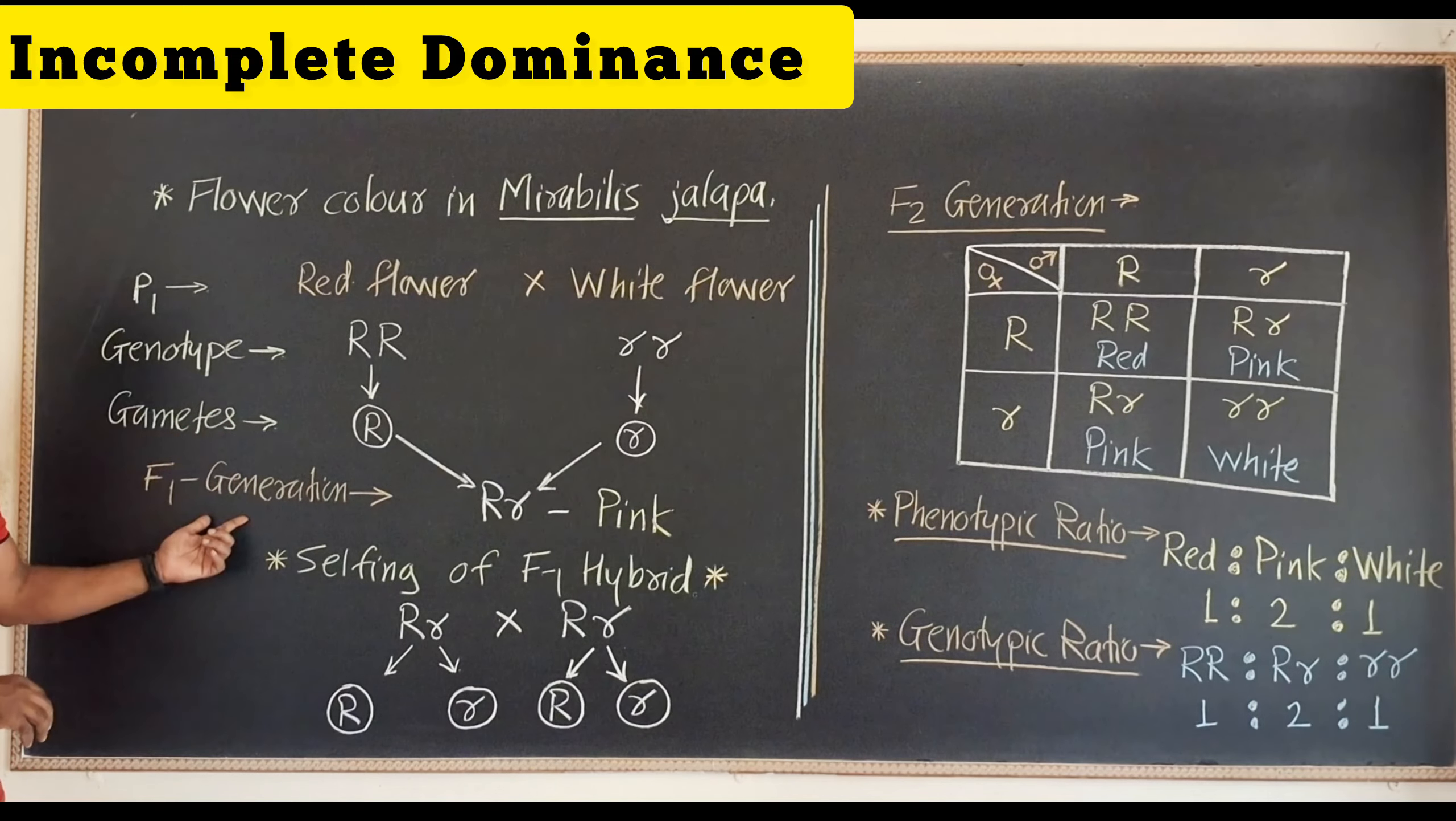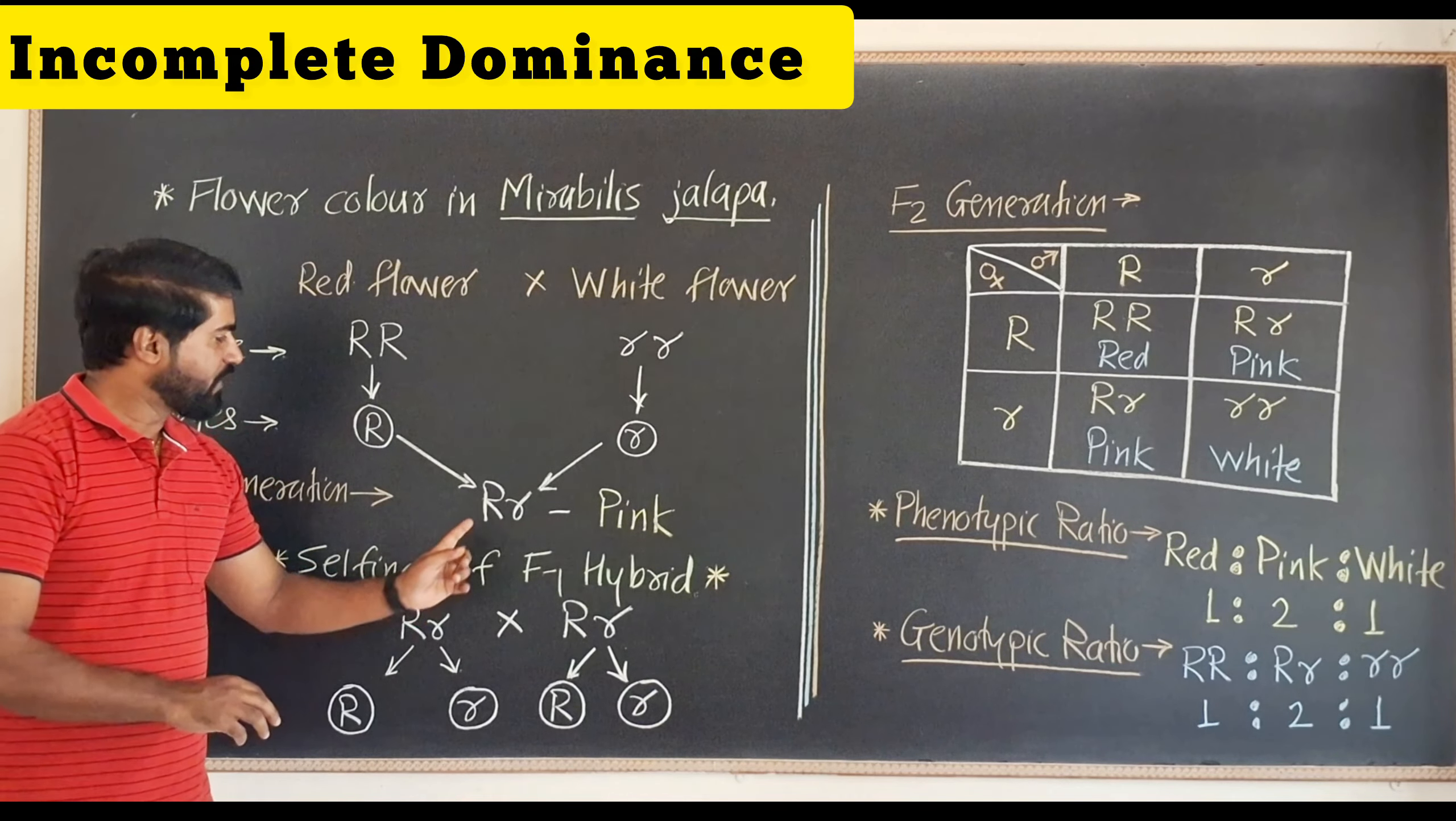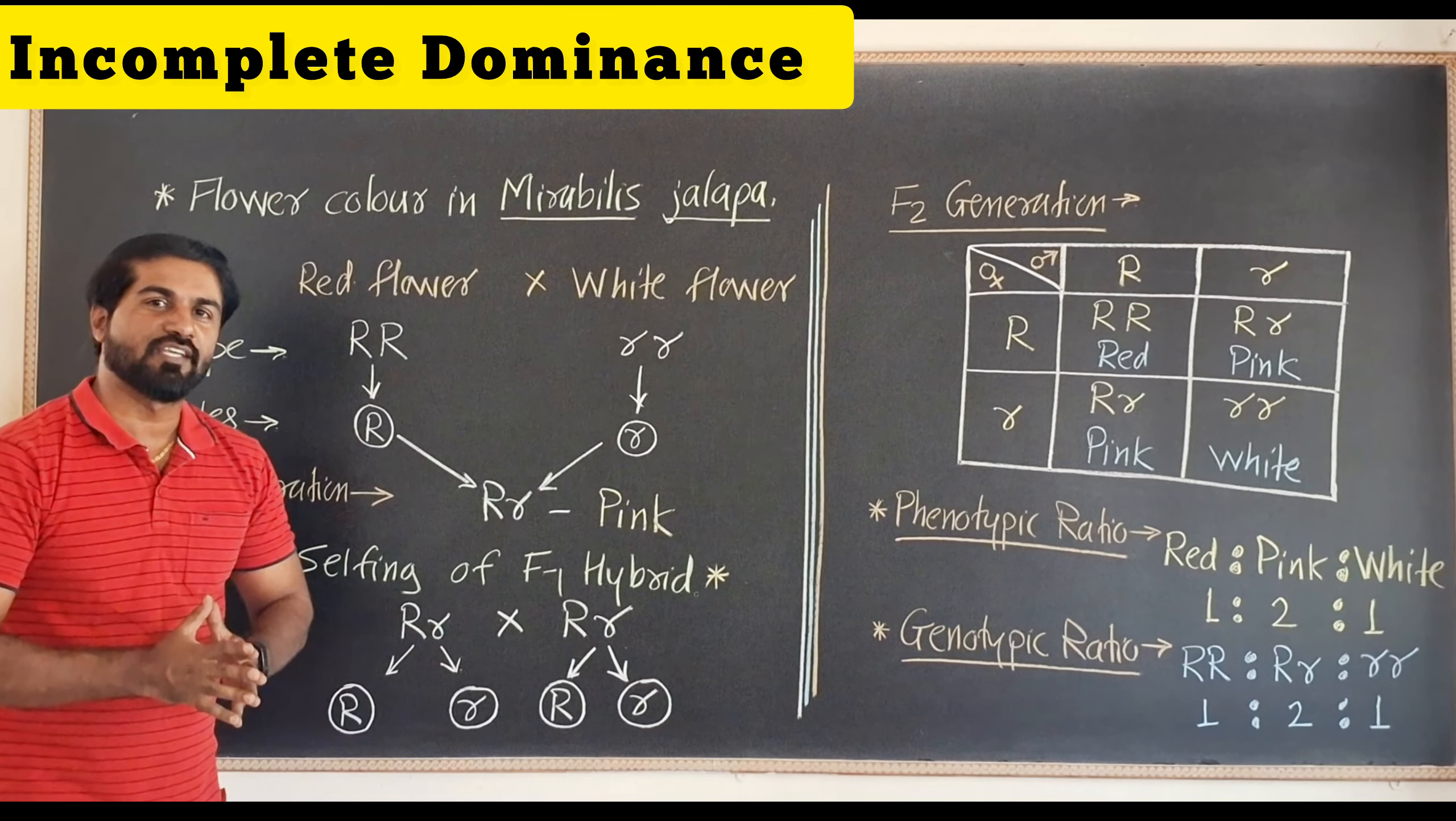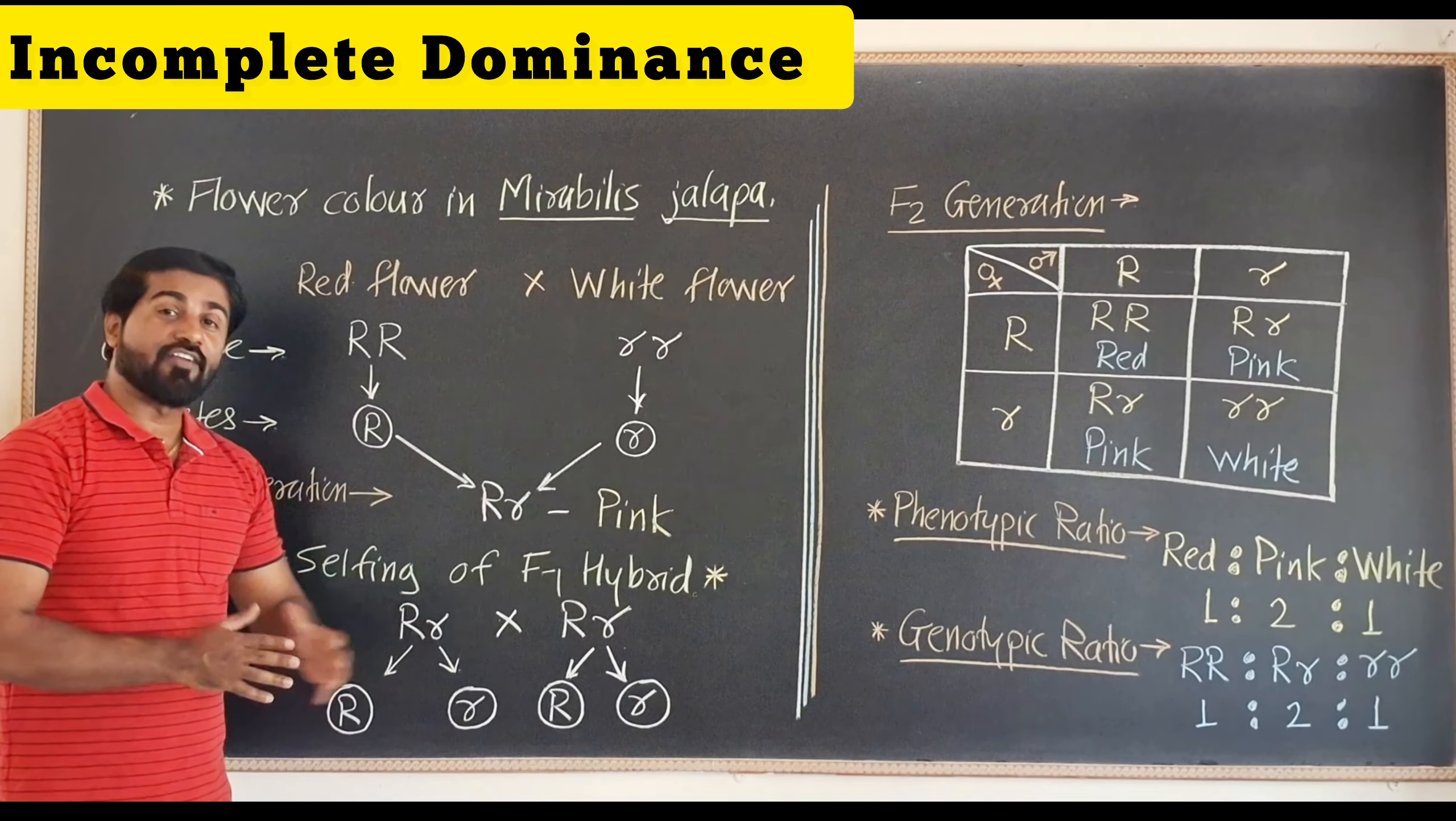In F1 generation it will produce hybrid, that means capital R small r. If you remember, in monohybrid cross it was red flower.